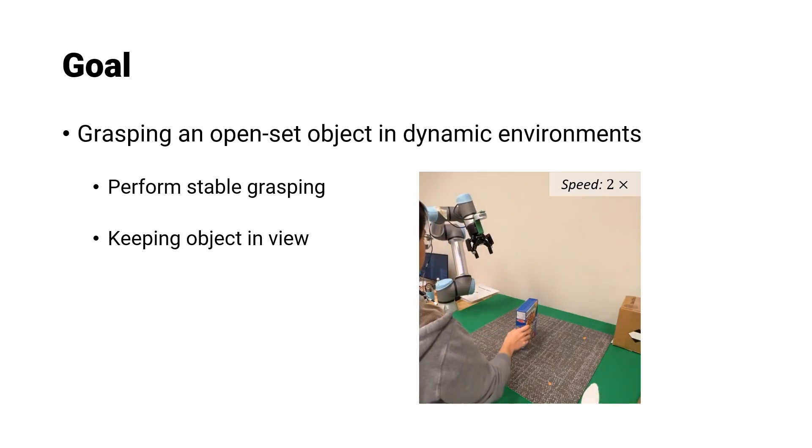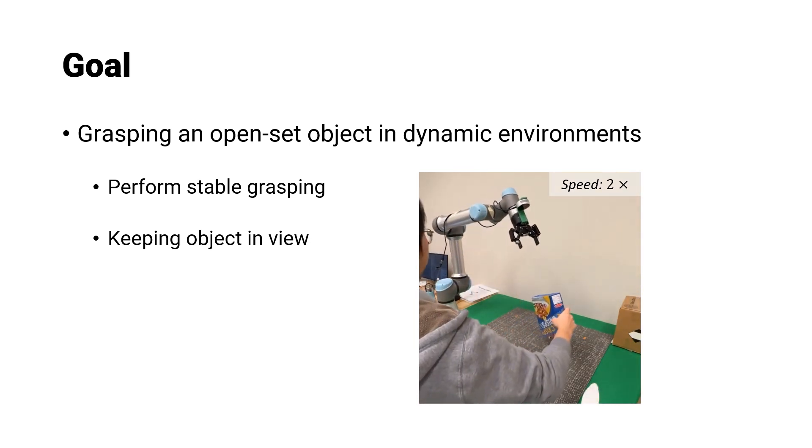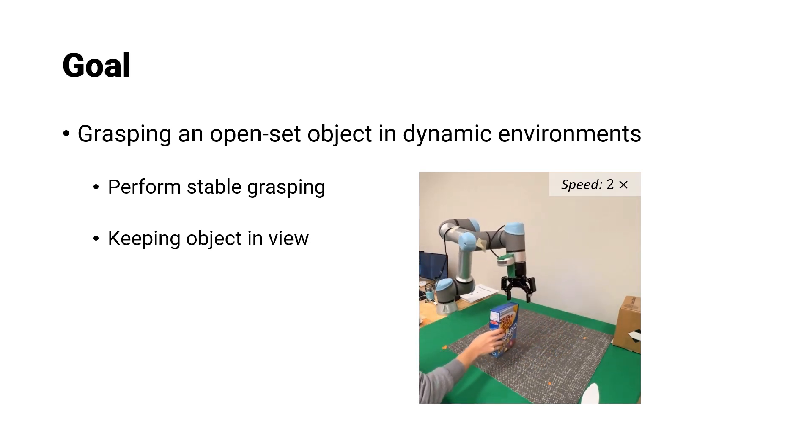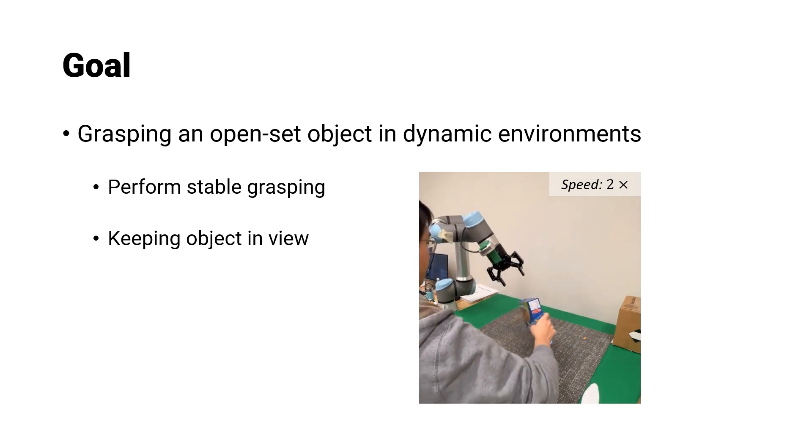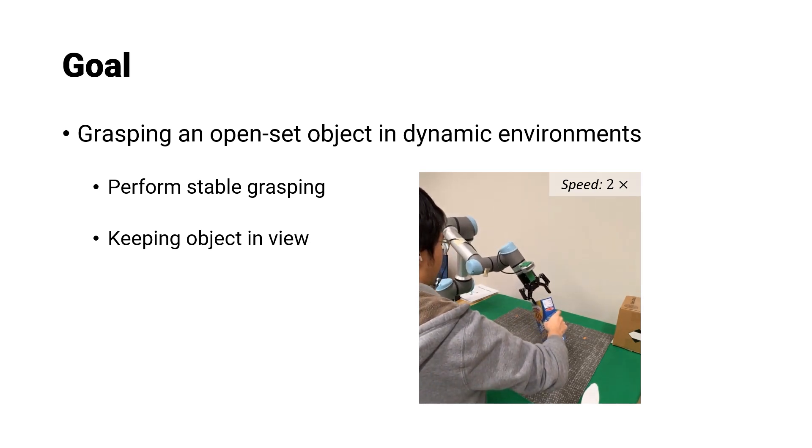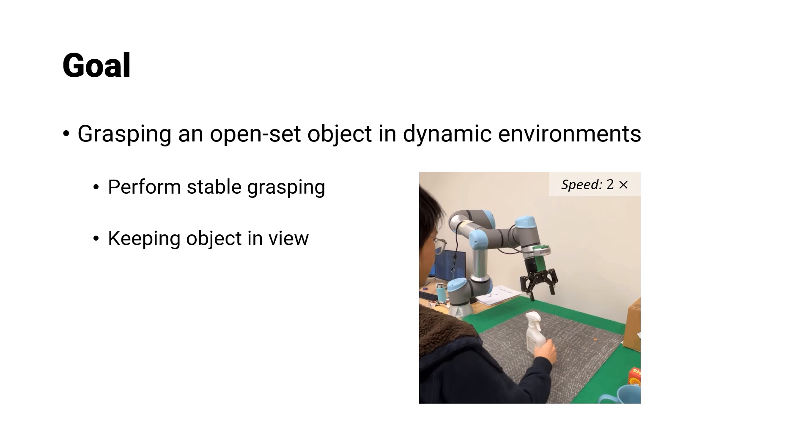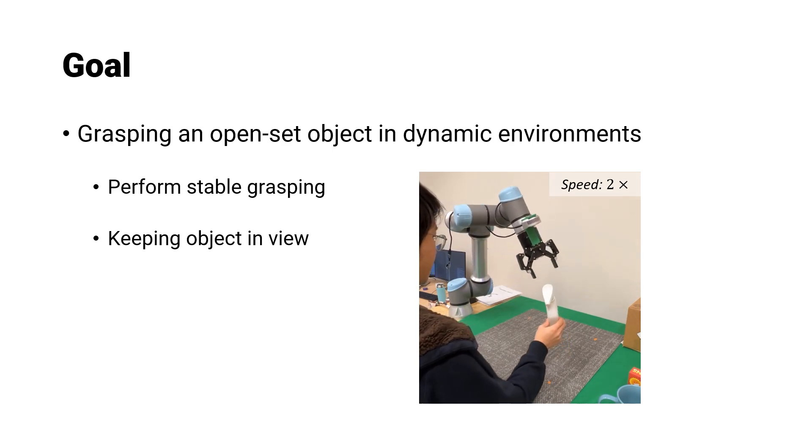The robotic system is tasked with continuously tracking the target object as it approaches. If the object exhibits rapid movement, the robot is designed to adapt by either maintaining a hovering position or retreating, thereby ensuring that the object remains within the field of view of the onboard camera.